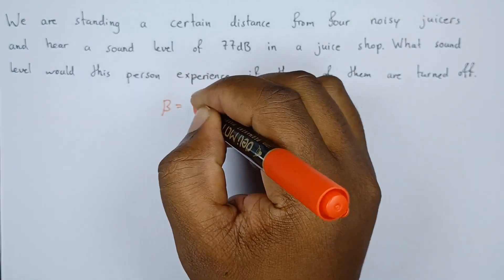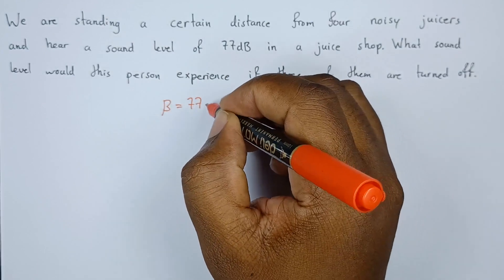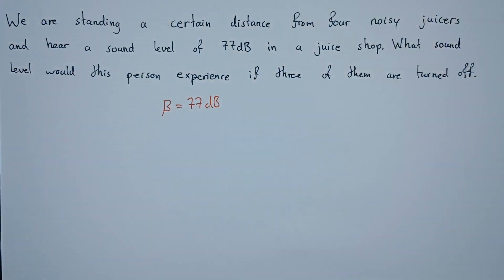We have the level which is 77 dB. What we are looking for first of all is the intensity, assuming that each juicer produces a sound intensity of I.